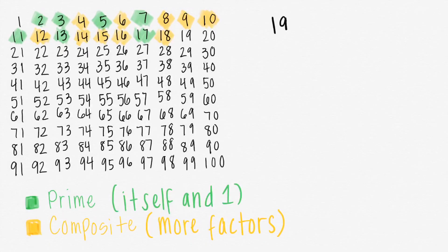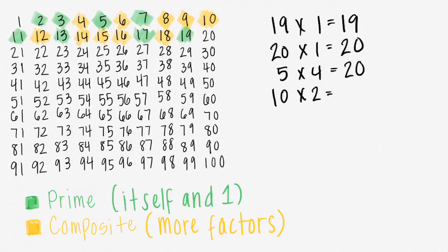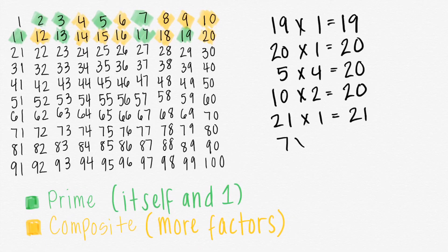19 times 1 equals 19, and there's no other way to get 19, so 19 is prime. 20 times 1 equals 20. 5 times 4 also equals 20, and 10 times 2 is also 20, which means that 20 is composite. 21 times 1 equals 21, but you can also do 7 times 3 equals 21. That means 21 is composite.